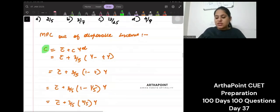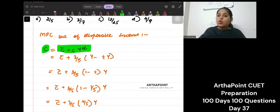And you are given marginal propensity to consume out of disposable income as 3 by 5. So tell me, what is the equation of consumption? C is C bar plus c times YD. And what is YD? YD is Y minus T times Y.